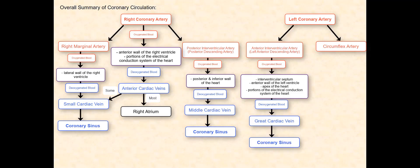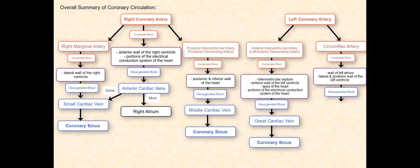The circumflex artery supplies oxygenated blood to the wall of the left atrium and the lateral and posterior wall of the left ventricle. The deoxygenated blood is then received by the posterior vein of the left ventricle, which converges with the coronary sinus. The coronary sinus drains the deoxygenated blood it received from the small cardiac vein, the middle cardiac vein, the great cardiac vein, and the posterior vein of the left ventricle into the right atrium.